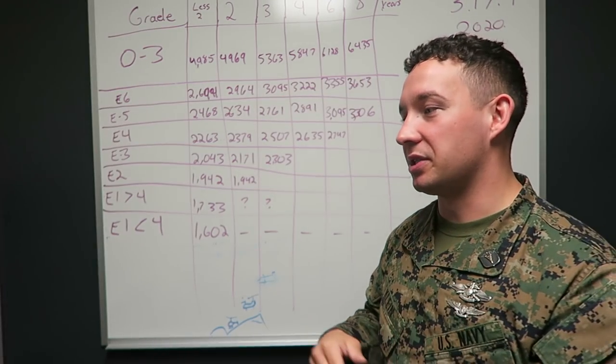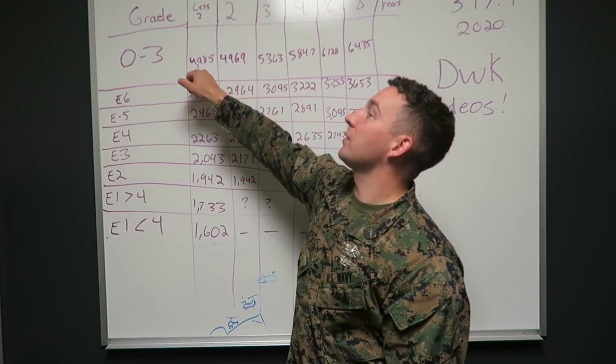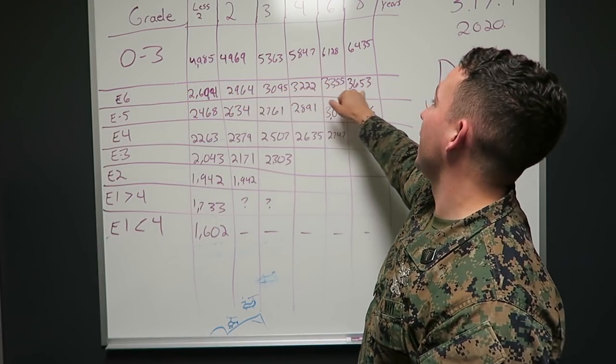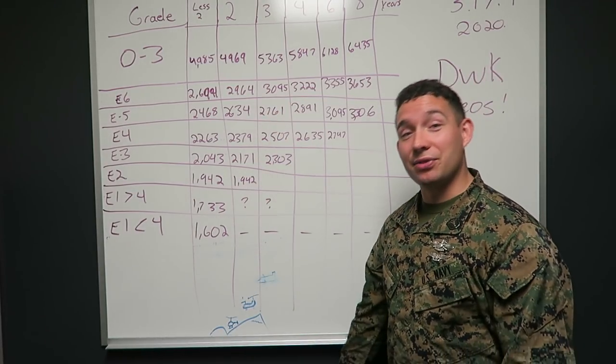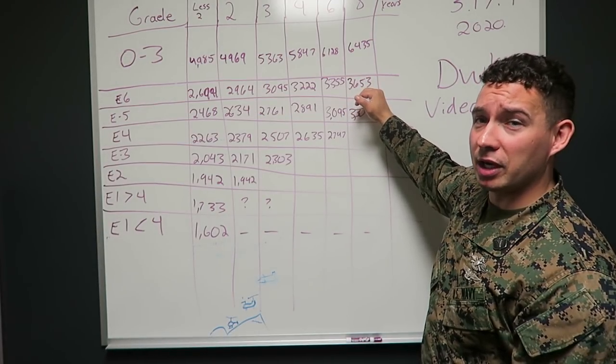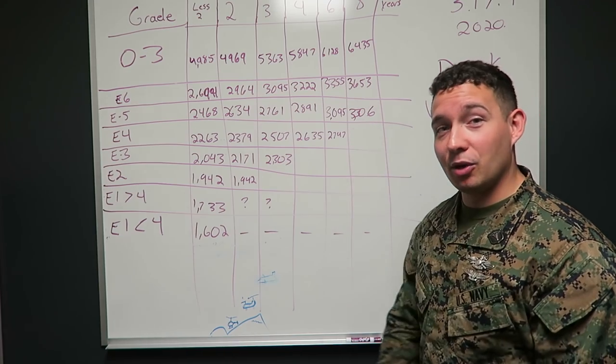If you're debating whether or not you should go enlisted or officer and money is a key factor for you, an O3 with less than two years, an O3 that just joined, $4,985. An E6 who's been in eight years, $3,653. A thousand, $300 plus bonus. Just joining as an officer, you're making $1,300 more than an E6 who could have possibly been to war.